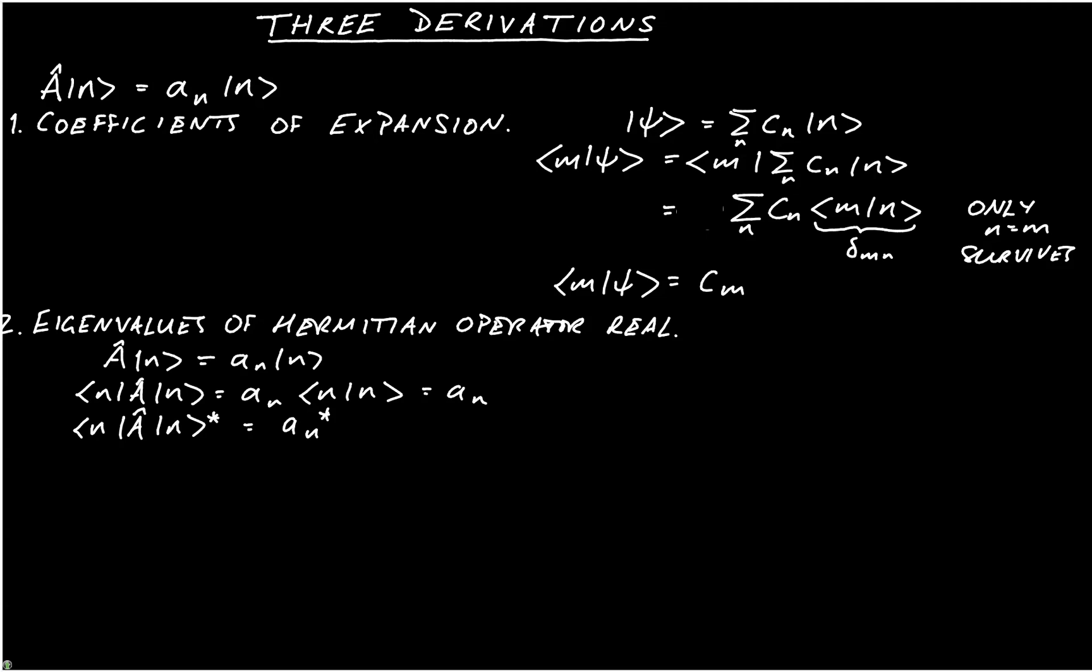To take the complex conjugate of the contraction, we simply swap the order of the bra and the ket, but as they're the same, that doesn't change anything. And we take the Hermitian conjugate of A, but as that's Hermitian, that stays the same.